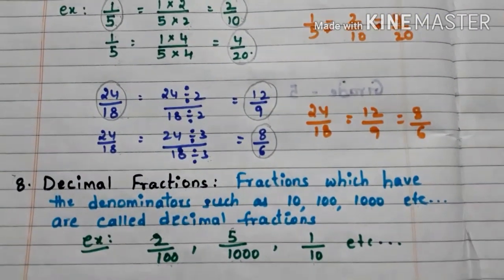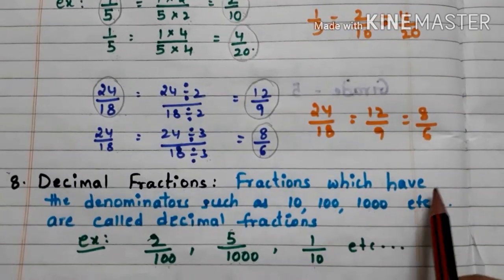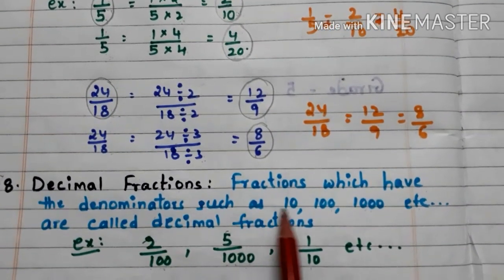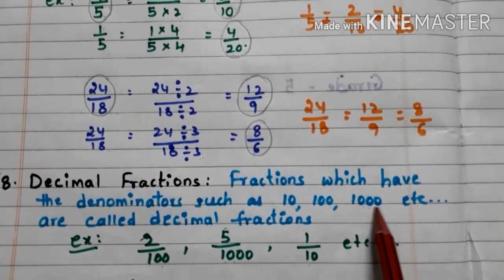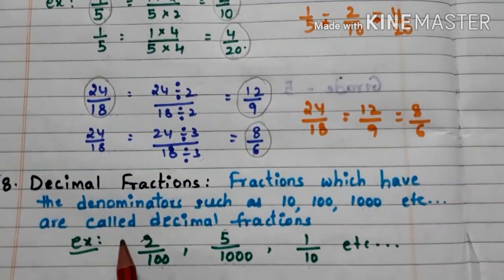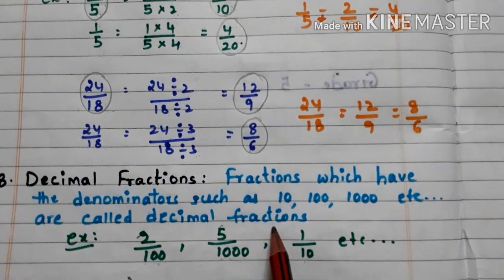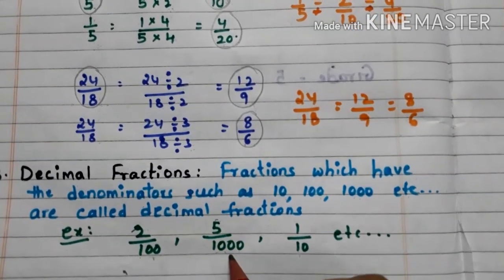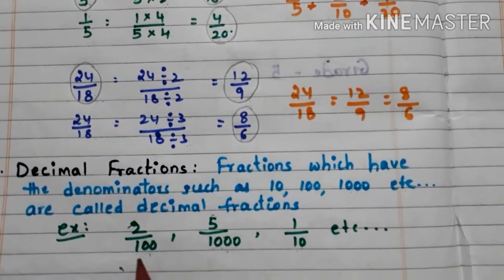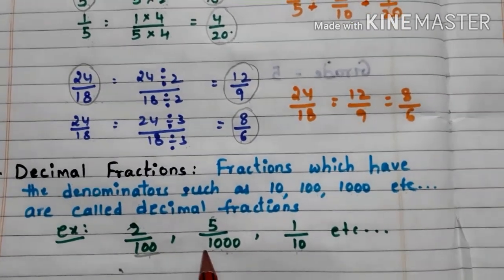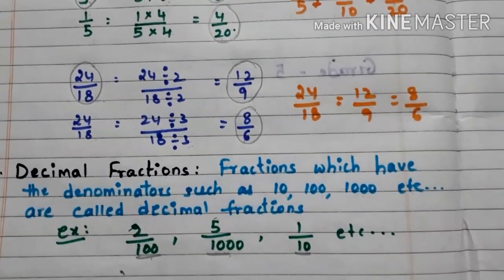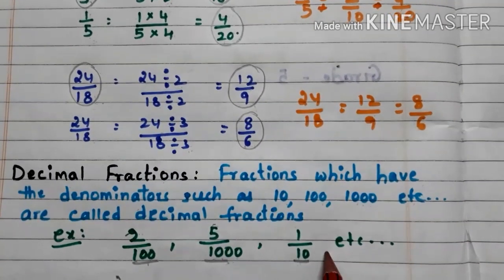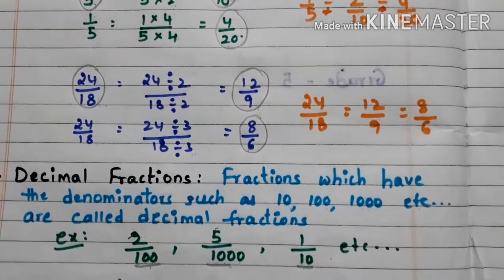Let us go to decimal fractions. Fractions which have denominators such as 10, 100, 1000, etc. are called decimal fractions. Here we have some examples: 2 by 100, 5 by 1000, 1 by 10. Observe the denominators — 10, 100, 1000. So these type of fractions are known as decimal fractions.